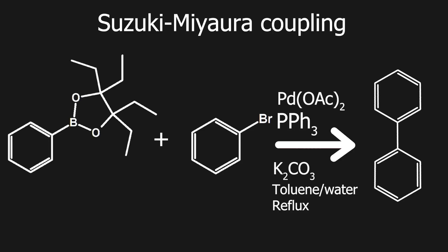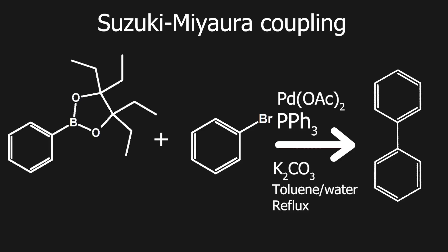As a small recap, phenyl B-epin is a useful reagent to make C-C bonds with another aryl halide compound. It is much easier to purify and usually has higher yields compared to the currently used B-pin compounds.